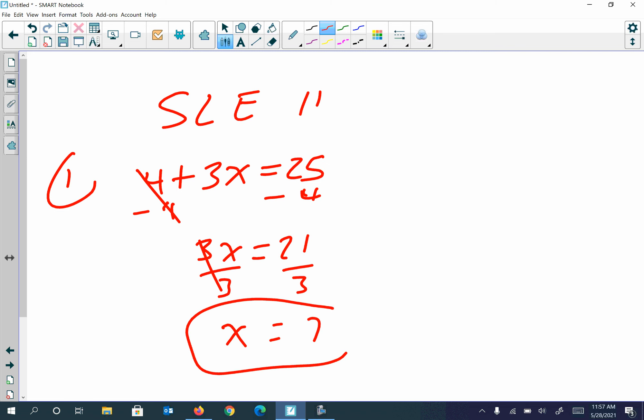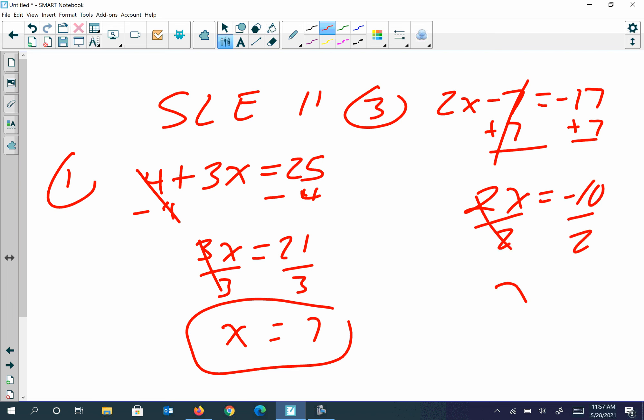There's our answer. Problem number 3 says the difference between twice the number and seven, so twice the number and seven, a difference means subtract, is equal to negative 17. We're going to add 7 to both sides, those cancel, so I get 2x is equal to negative 10. Divide each side by 2, so x equals, reduce that to get you to negative 5.